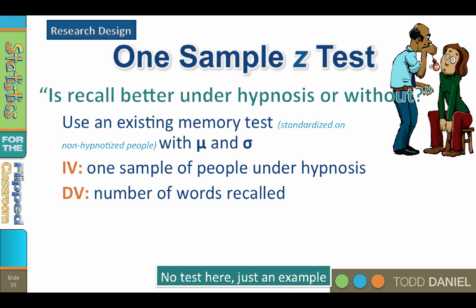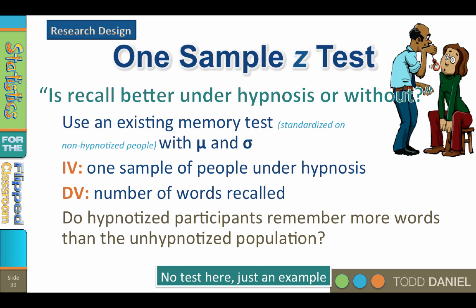The dependent variable is the number of words recalled on the memory test — how many words did each hypnotized person get correct? Comparing the sample mean of our hypnotized sample to the mean and standard deviation of the test, which represents a population, would allow us to answer the question: do hypnotized participants remember more words than the unhypnotized population? No test here, just an example.